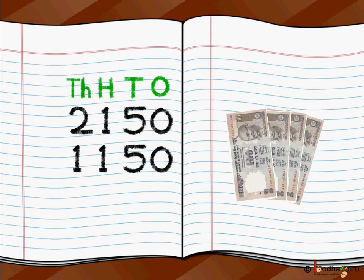We ensure that we write the digits of both numbers at the correct place — that is, their 1's position at the 1's position place. Same thing for the 10's position, 100's position, as well as the 1000's position. One below another.